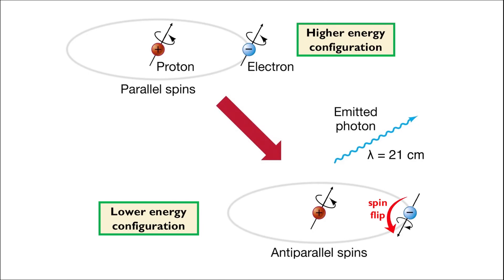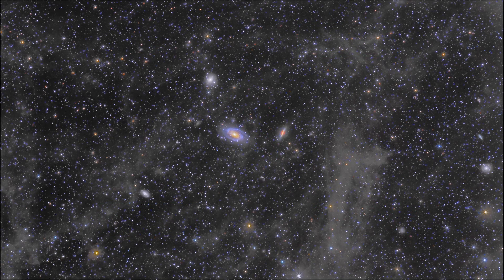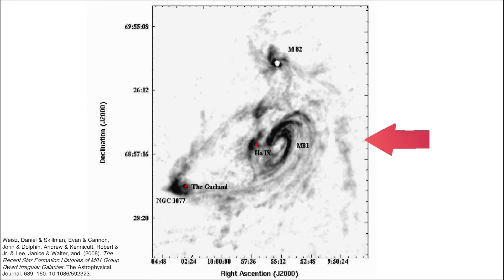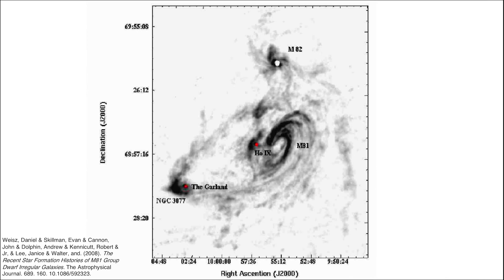We call this the spin flip of hydrogen. Since there is no visible color associated with the 21 centimeter line — as this wavelength falls in the radio range of the EM spectrum — most images of atomic nebulae are either false colored or digitally composed by intensity mapping. For example, this wide-field image of galaxies M81, M82, and NGC 3077 in the constellation Ursa Major is taken in visible wavelengths but has also been photographed using the 21 centimeter line from the spin flip of neutral hydrogen. These intensity maps show that darker or more concentrated areas have higher 21 centimeter line intensity, corresponding to greater amounts of neutral hydrogen.